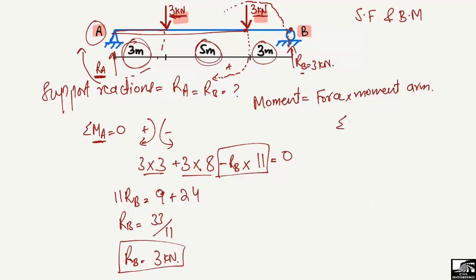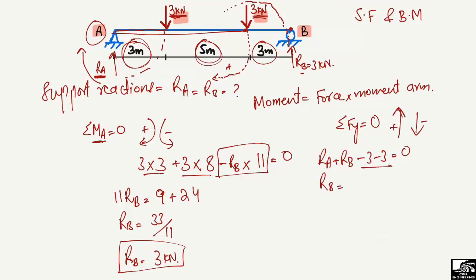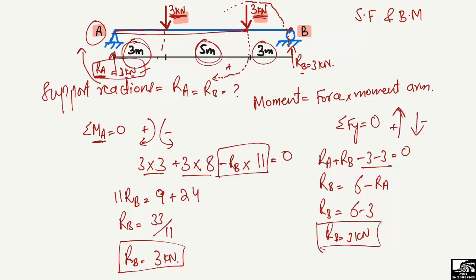To find RA, we use the equilibrium equation: summation of vertical forces equals zero. Upward forces RA and RB are positive; downward forces of 3 kilonewton and 3 kilonewton are negative. So RA + RB = 6, and since RB = 3, we get RA = 6 minus 3 = 3 kilonewton. Both support reactions are 3 kilonewton.